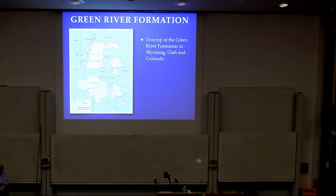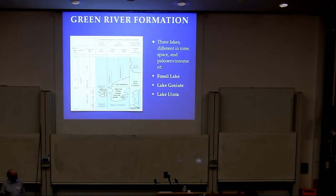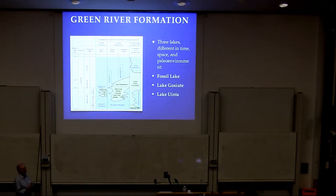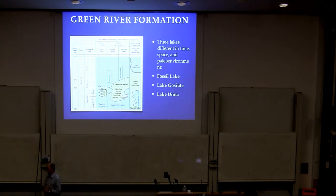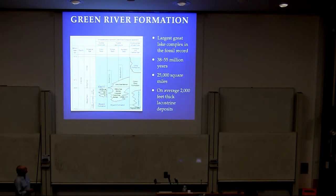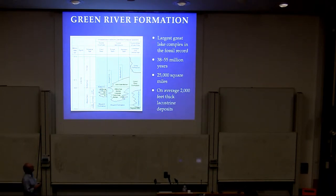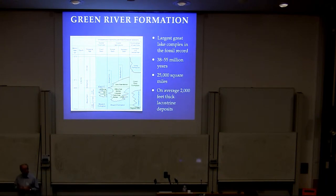Back in the Eocene: Lake Goschute, Lake Green River, and so forth. Stratigraphically, what we have is a number of different lakes of varying extent over a long period of geological time — three major lake systems. In fact, this is the largest of Great Lakes complexes in the fossil record. It spanned 38 to 55 million years ago and covered 25,000 square miles.